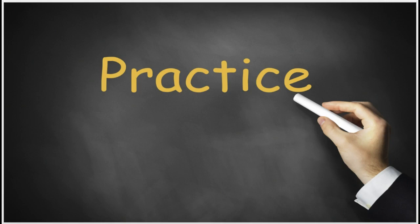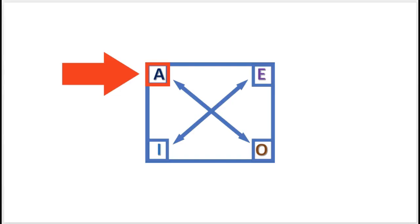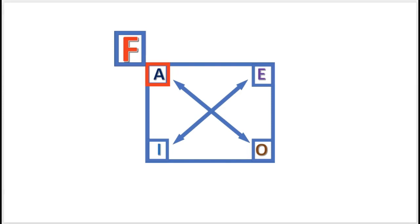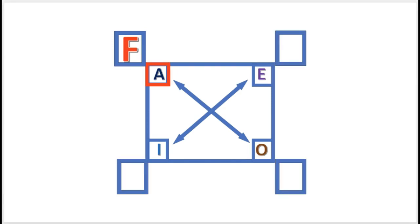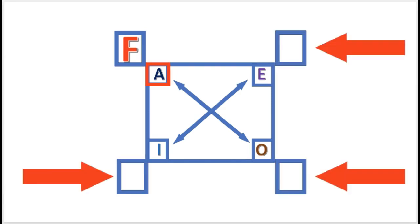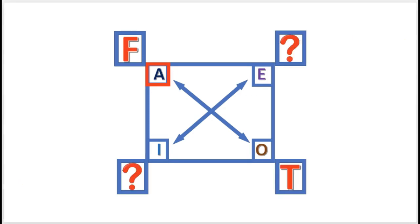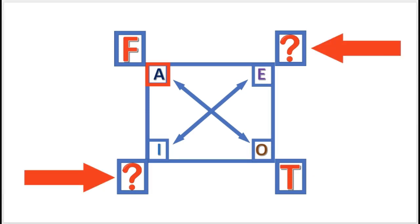Let's work a few practice problems. Practice problem one: if this A proposition is false, what is the truth value of the other propositions? O is true. E and I are undetermined.